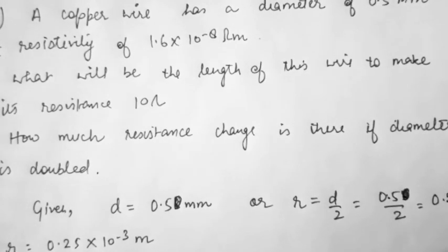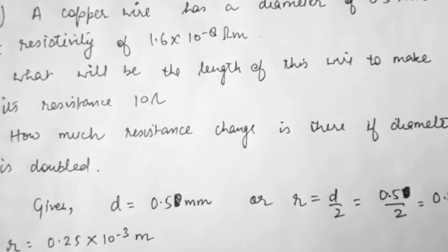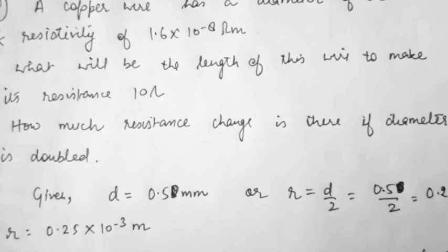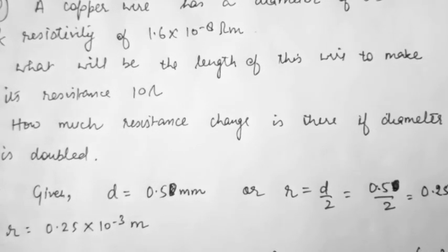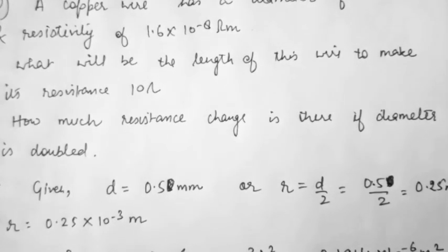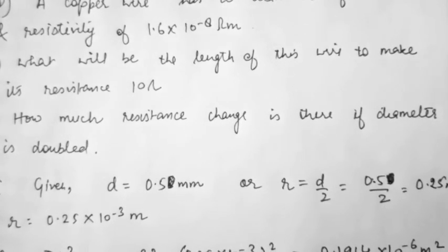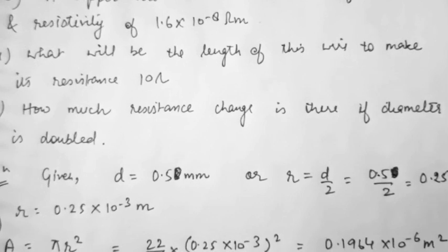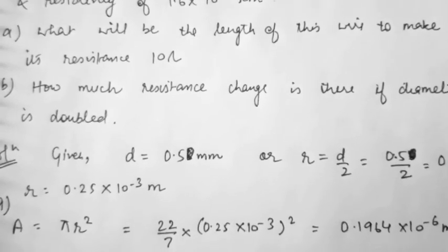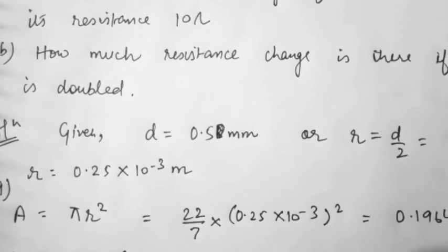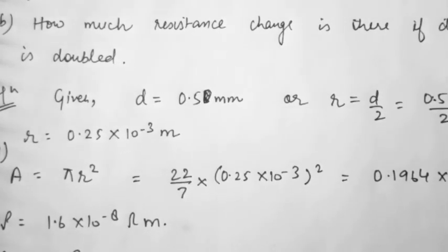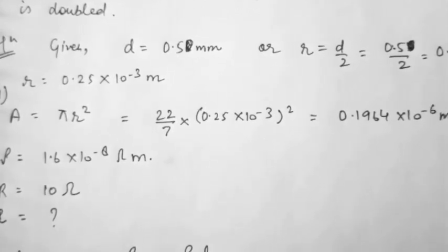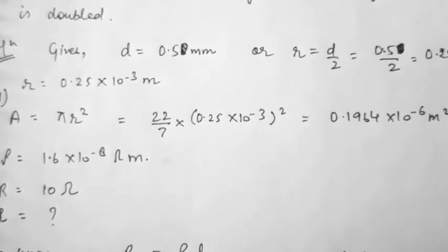The next question: a copper wire has a diameter of 0.5 millimeter and resistivity of 1.6 × 10⁻⁸ ohm meter. What will be the length of wire to make its resistance 10 ohm, and how much does resistance change if the diameter is doubled? For part one: diameter = 0.5 mm, so radius = 0.25 mm = 0.25 × 10⁻³ m. Area = πr² = (22/7) × (0.25 × 10⁻³)² = 0.1964 × 10⁻⁶ m².